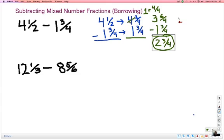The process again is borrowing from the whole number on the top fraction. Rewrite it as a top-heavy fraction or improper fraction. Let's go ahead and look at this next example real quick. 12 and 1 third minus 8 and 5 sixths.